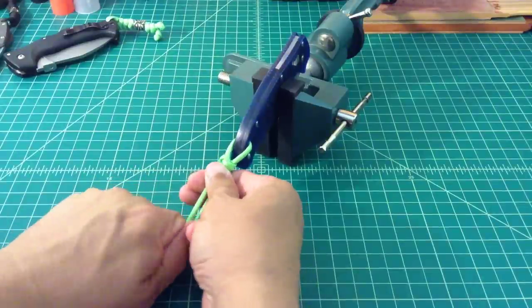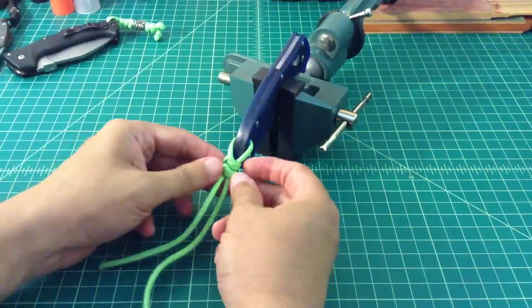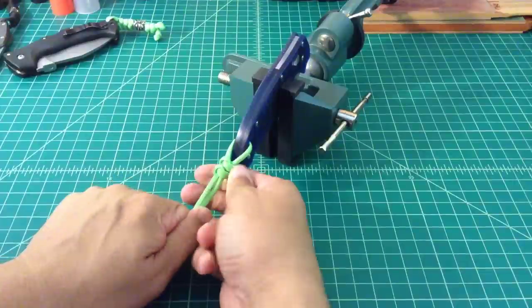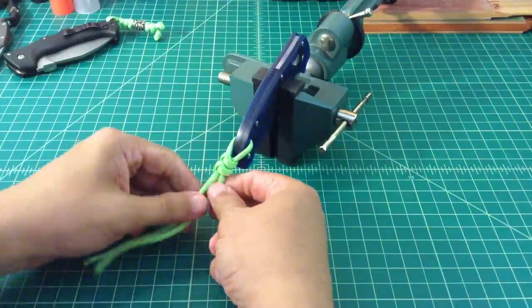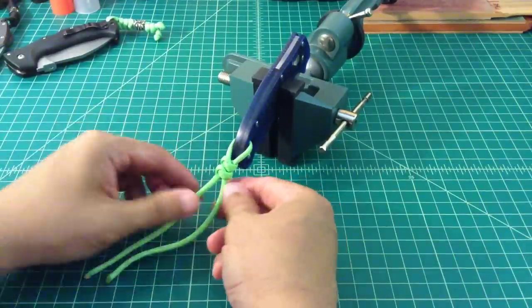Now I'm not going to leave this neon green lanyard on that blue knife. I don't think it looks very good. But I'm just using green for the purposes of the video to make it easy to see. So there's two knots.